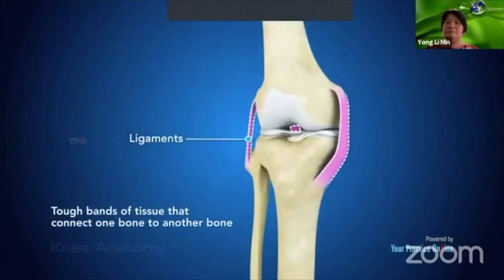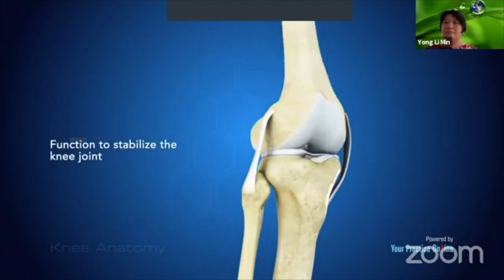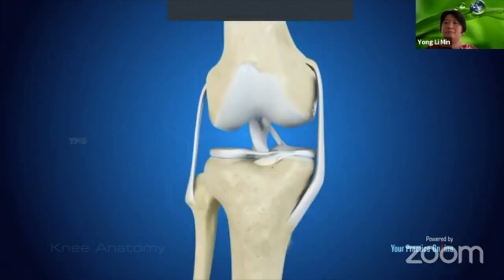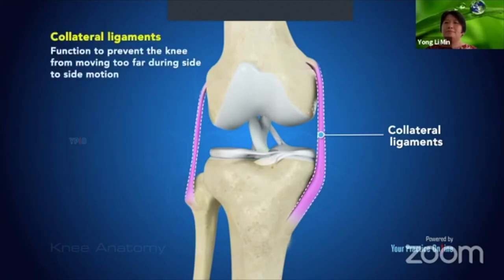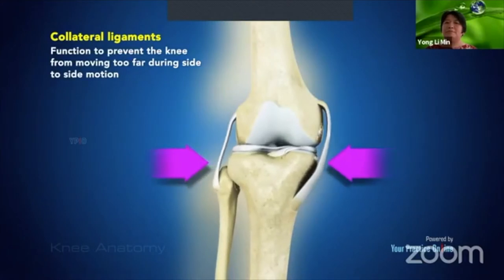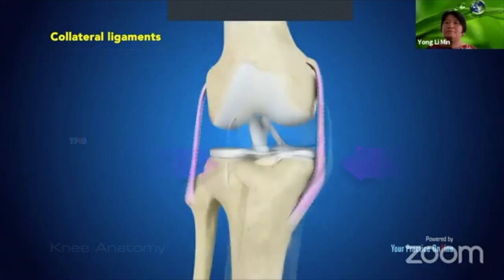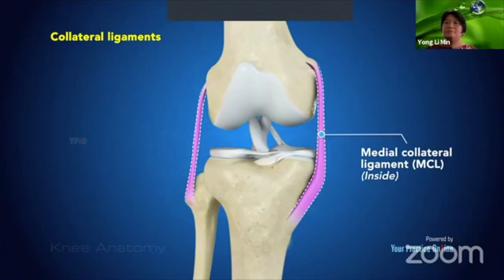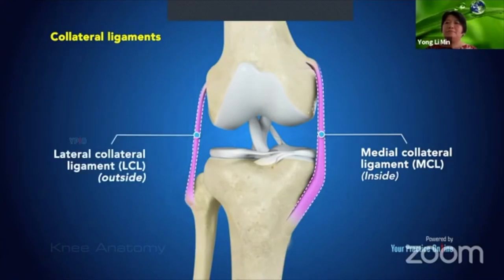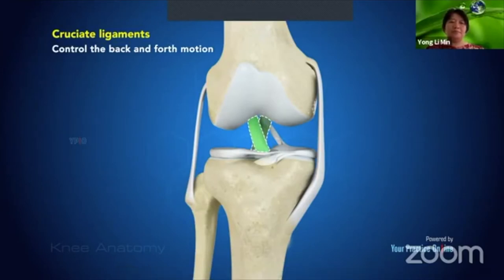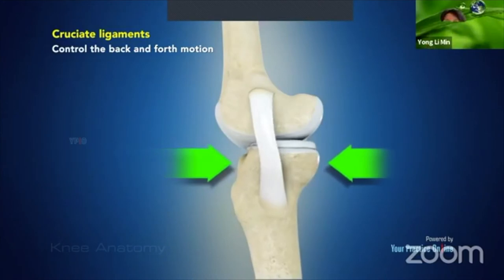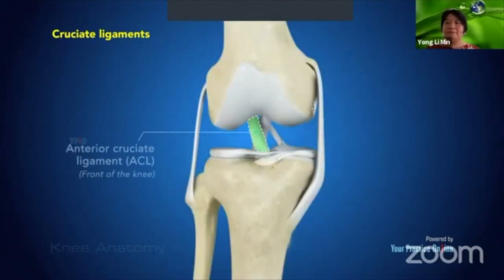Ligaments are tough bands of tissue that connect bone to bone. The knee has two important groups: collateral ligaments and cruciate ligaments. Collateral ligaments on either side of the knee prevent side-to-side movement — the medial collateral ligament (MCL) on the inside and the lateral collateral ligament (LCL) on the outside. Cruciate ligaments inside the joint control back-and-forth motion — the anterior cruciate ligament (ACL) in front and the posterior cruciate ligament (PCL) at the back.